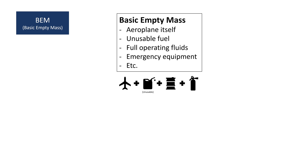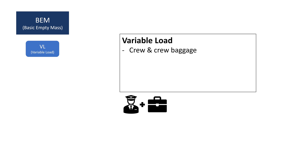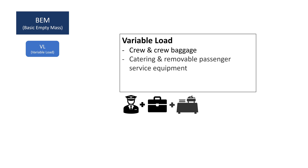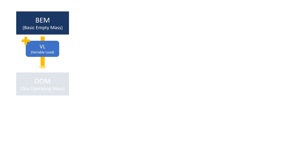The variable load is defined as the equipment and crew required to perform a specific type of operation. It includes the crew and their baggage, things like catering and removable passenger service equipment, water, lavatory chemicals and of course food and beverages. If we add the variable load to the basic empty mass, we get the dry operating mass.